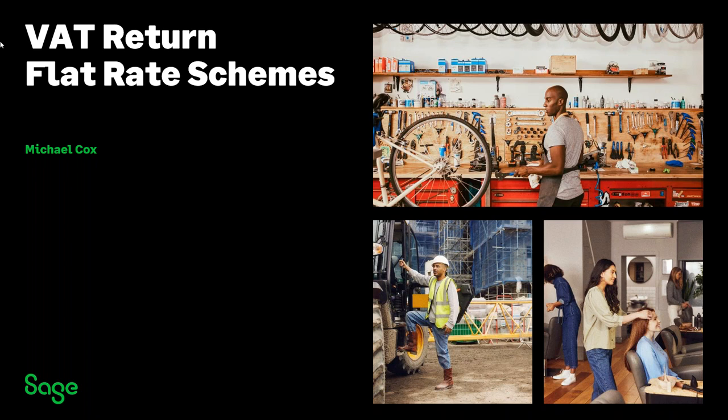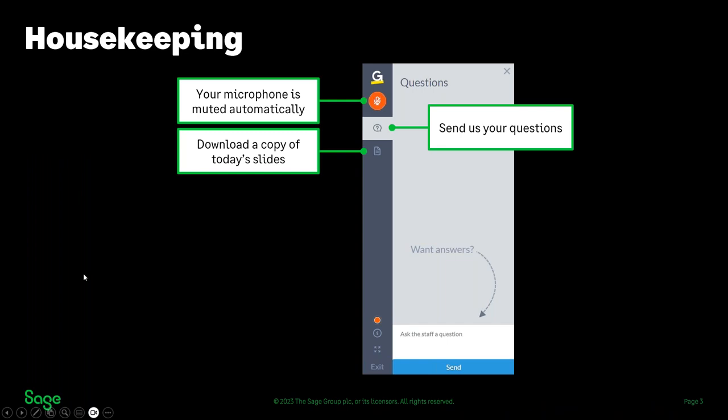A little bit of housekeeping before we get started. You don't need a microphone for these sessions — if you've got one enabled, you'll find you're just muted automatically. You can't verbally speak to me during the session, but you will be able to pop your questions in via the questions panel. To access it, click the little icon on your toolbar — the one that looks like a speech bubble containing a question mark. Give it a click, it'll expand the panel, and you get a box in the bottom right-hand corner where you can start typing any questions or comments.